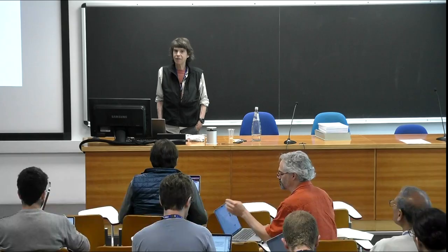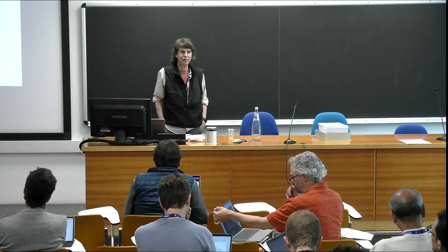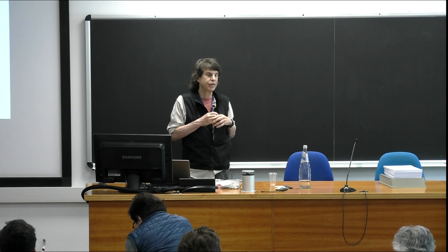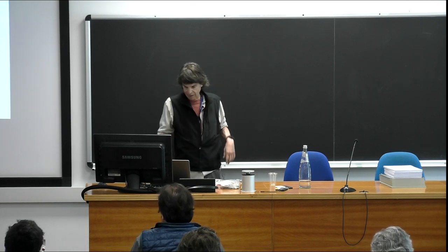Hello everybody. First I'd like to thank Mateo and Myrta for organizing this and for inviting me to add it on to my ICTP visit. What I'm going to present here can be extended to apply to human being collective agency, but it's a challenging enough problem when you're just trying to control collective agents that are automated — reinforcement learners, robots, or something that you yourself have designed. This is also what's called distributed control, distributed optimization — a huge problem in fields from air traffic control to designing clusters of satellites on Mars.